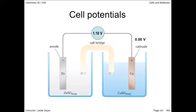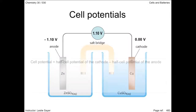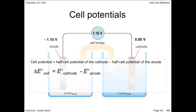The voltmeter reading would be 1.10 volts as the standard cell potential. Since the cell potential is the difference between the two half-cells, that makes the half-cell potential for the anode negative 1.10 volts. The key equation to remember is: cell potential equals the half-cell potential of the cathode minus the half-cell potential of the anode. This is why the anode is negative 1.10 volts, so that the voltmeter reads a positive number. All voltaic cells have positive cell potentials.